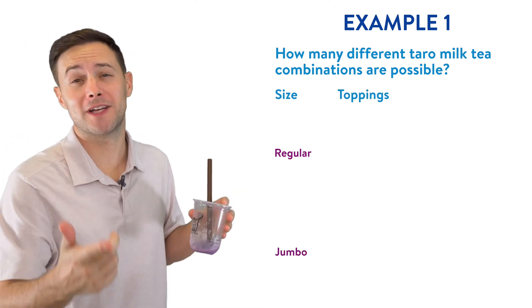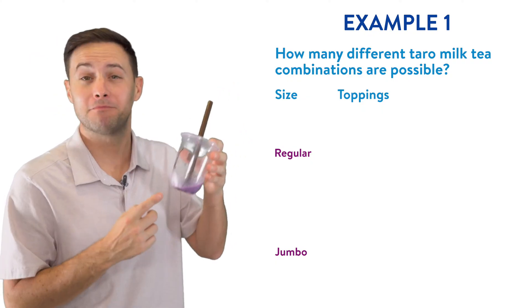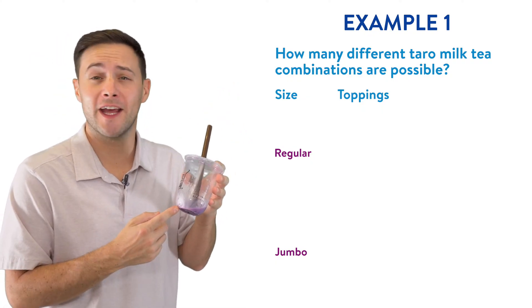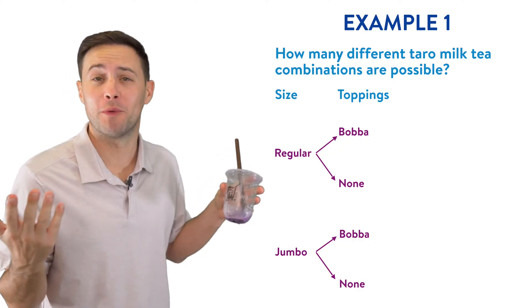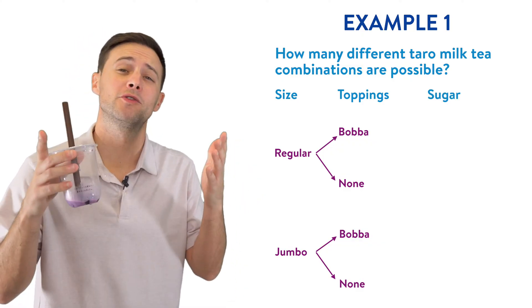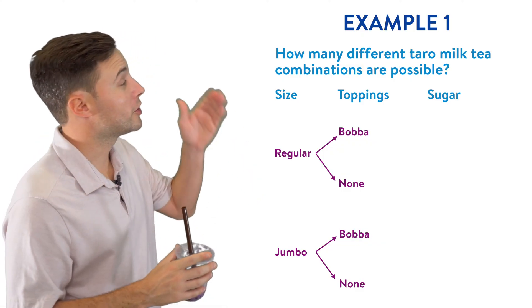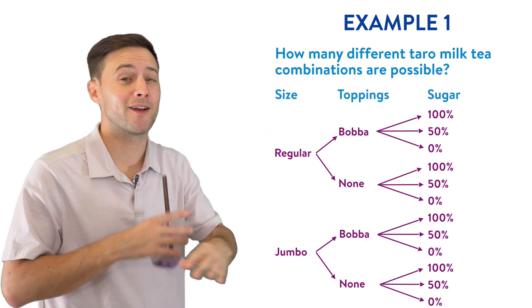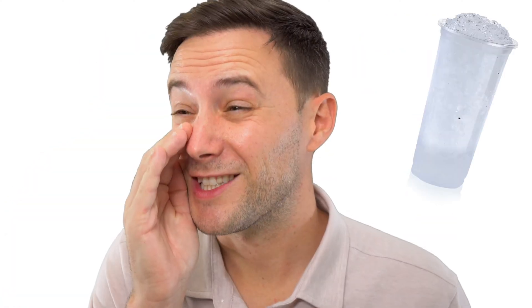Second, you got to choose your toppings, or should I say bottomings. I decided to go with the standard boba, but you could also choose no boba. And then from there, you have to choose how much sugar you want in the drink. You could go 100%, 50%, or no sugar at all. You actually can choose the ice too, but I didn't want to make the problem too long.